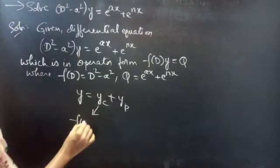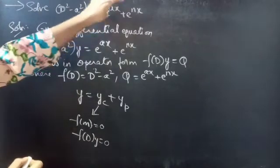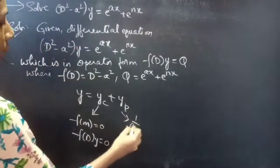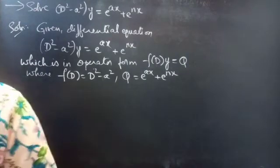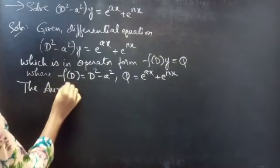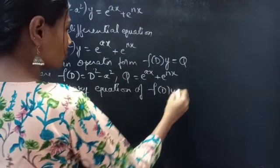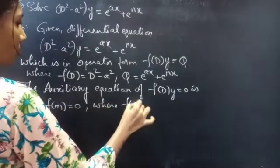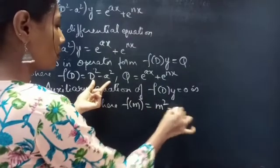We will find yc using the auxiliary equation of the homogeneous equation of the given non-homogeneous equation. Simply by considering the RHS equal to 0, we get the homogeneous equation. The auxiliary equation of f(D)·y = 0 is f(m) = 0, where f(m) is obtained by replacing differential operator D by m in f(D). Then f(m) = m² − a².